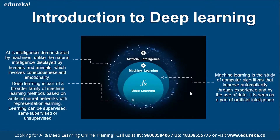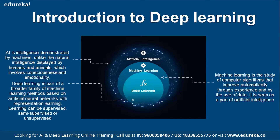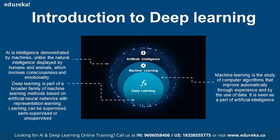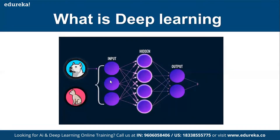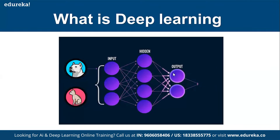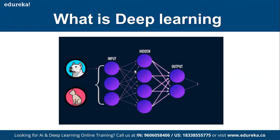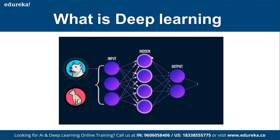Deep learning is a subset of machine learning. It mainly applies neural network concepts for in-depth machine learning tasks. Deep learning can be used for both supervised and unsupervised learning. In deep learning, we have multiple layers: input layers, multiple hidden layers, and the corresponding output layers. The hidden layers perform a lot of internal computations to produce the corresponding output.